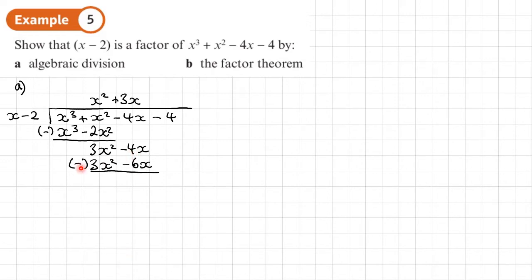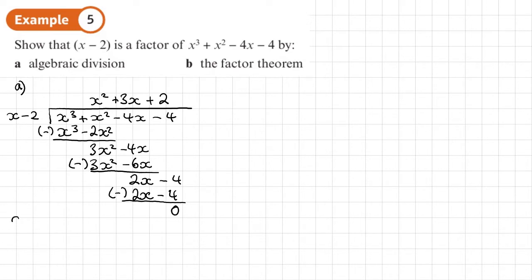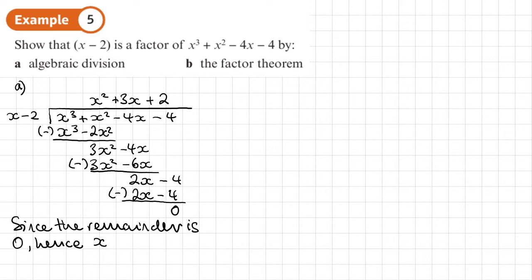That leaves us with negative 4x plus 6x, which is 2x. Bring down the negative 4. How many times does x go into 2x? That's just 2. x times by 2 is 2x. Multiply the 2 by the divisor to get 2x minus 4. Subtract — since they're the same, we get a remainder of 0. Since the remainder is 0, hence x minus 2 is a factor of x cubed plus x squared minus 4x minus 4.